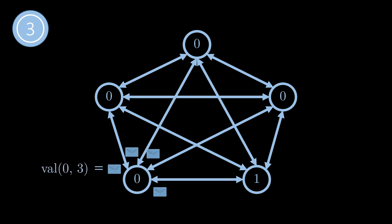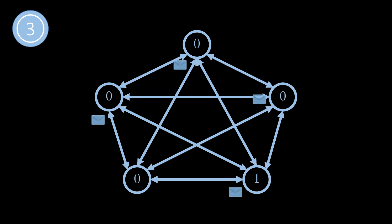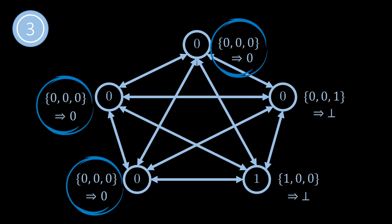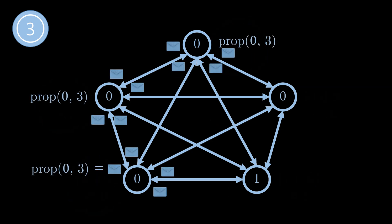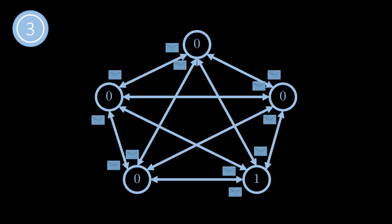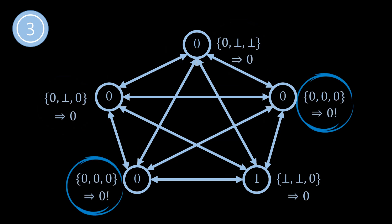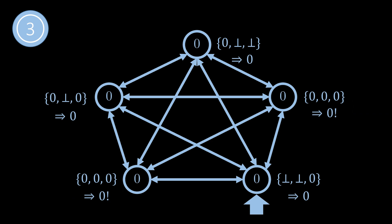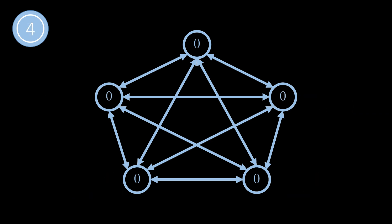In round three the nodes again broadcast their values and collect three of these messages. In the example three nodes now manage to get only zeros; as a result these three nodes send proposals for zero. Now it happens that two nodes received only proposals for zero — that is, no empty proposals — so these nodes decide on zero, but they continue to execute the algorithm for one more round. As we can see in the example, every node received at least one proposal for zero, so all nodes set their value to zero.